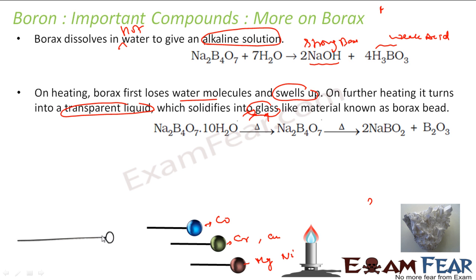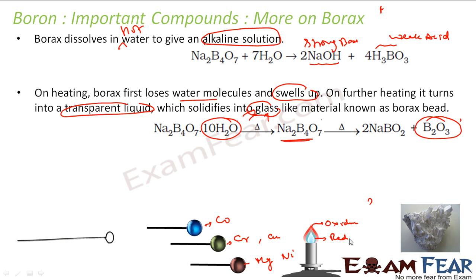In the borax bead test, we take a platinum wire because it is unreactive. We take some borax and heat it — the water molecules go off and it becomes Na2B4O7. When you further heat this, it solidifies into a glass-like bead on the wire. B2O3 is formed, and this gives different colors in the oxidizing and reducing flame. The upper part of the flame is the oxidizing flame and the lower part is the reducing flame.